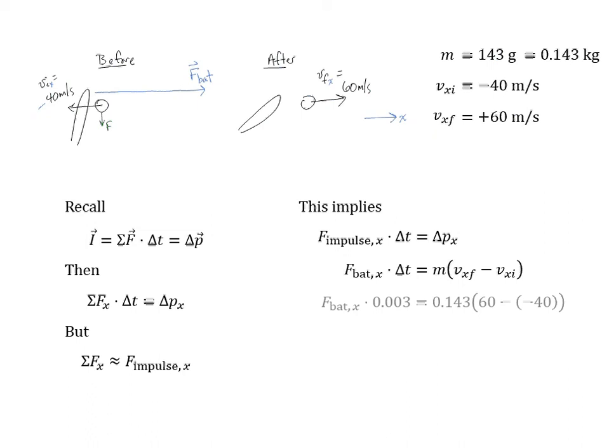Plugging in the values that we know, the elapsed time is 3 milliseconds—I probably should have written that down in this slide somewhere—but that's 0.003 seconds. It's going to equal the mass, 0.143, times the difference in the velocities. Once again though, the signs are very significant.